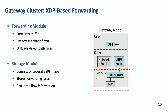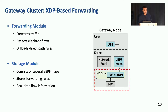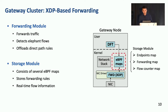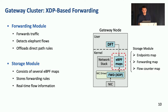Each gateway node consists of a forwarding module and a storage module. The forwarding module handles traffic forwarding, flow detection, and traffic offloading. The storage module is implemented with a set of eBPF maps — key-value stores that serve as a data channel between user space and kernel space, storing forwarding rules and real-time flow information.